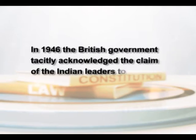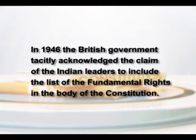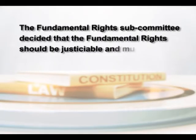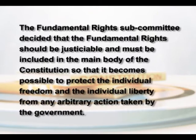Only in 1946, the British government tacitly acknowledged the claim of the Indian leaders to include the list of fundamental rights in the body of the Constitution, following the suggestion of the Cabinet Mission Plan. The fundamental rights subcommittee met for the first time on 27 February 1947, and in those meetings it was decided that the fundamental rights should be justiciable and must be included in the main body of the Constitution, so that it becomes possible to protect individual freedom and liberty from any arbitrary action taken by the government.